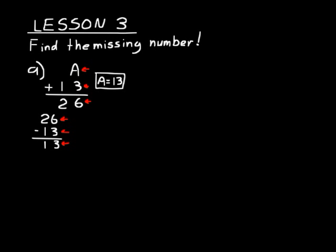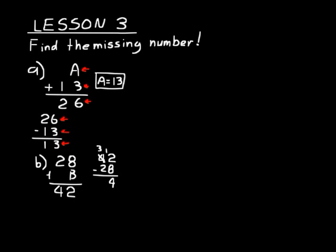Let's try another one. It's always a good idea after a practice problem to pause and try the next one on your own, then fast forward to the answer to see if you got it right. 28 plus B equals 42. We have our sum, so let's subtract the other addend from that to figure out what B is. 42 minus 28: 12 minus 8 is 4, make that a 3, then 3 minus 2 is 1. So B equals 14. We can check: 14 plus 28 does equal 42. Correct.